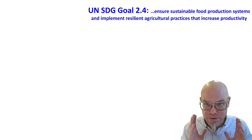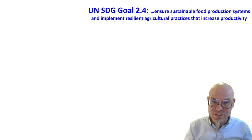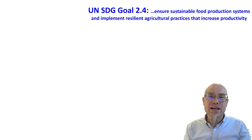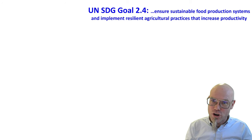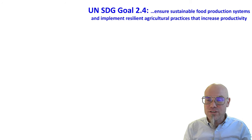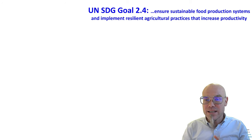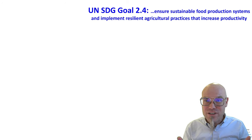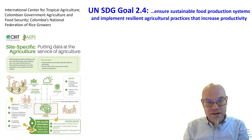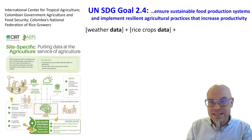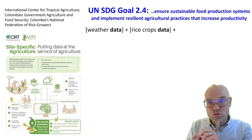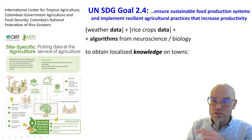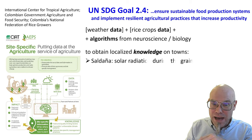Let's take a concrete case — we want to make the world a better place. Take the United Nations Sustainable Development Goals. One of these goals, agreed upon by sovereign countries on planet Earth, is to ensure sustainable food production systems and implement resilient agricultural practices that increase productivity. So how can the digital revolution help us do these kinds of things? Here's an example from Colombia: they used weather data and rice crops data, then used algorithms from neuroscience and biology to obtain localized knowledge about the rice harvest.